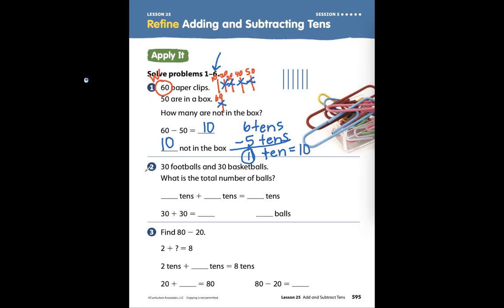Problem 2. 30 footballs and 30 basketballs. What is the total number of balls? 30 footballs and, that's a joining word, 30 basketballs. What is the total number of balls?